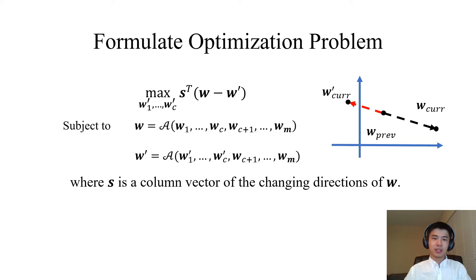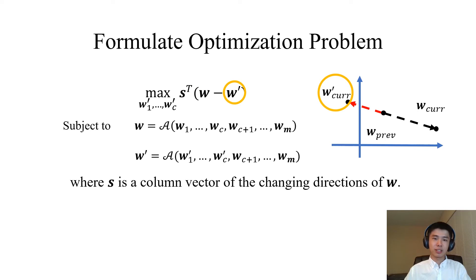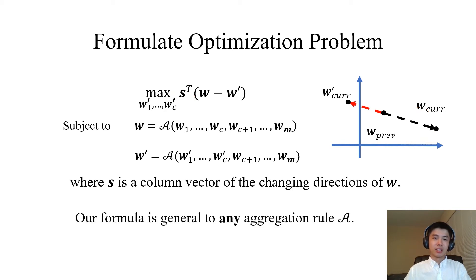Here, W is W_current and W_prime is W_current_prime from the illustration. Note that our formula can be applied to any aggregation rule A.